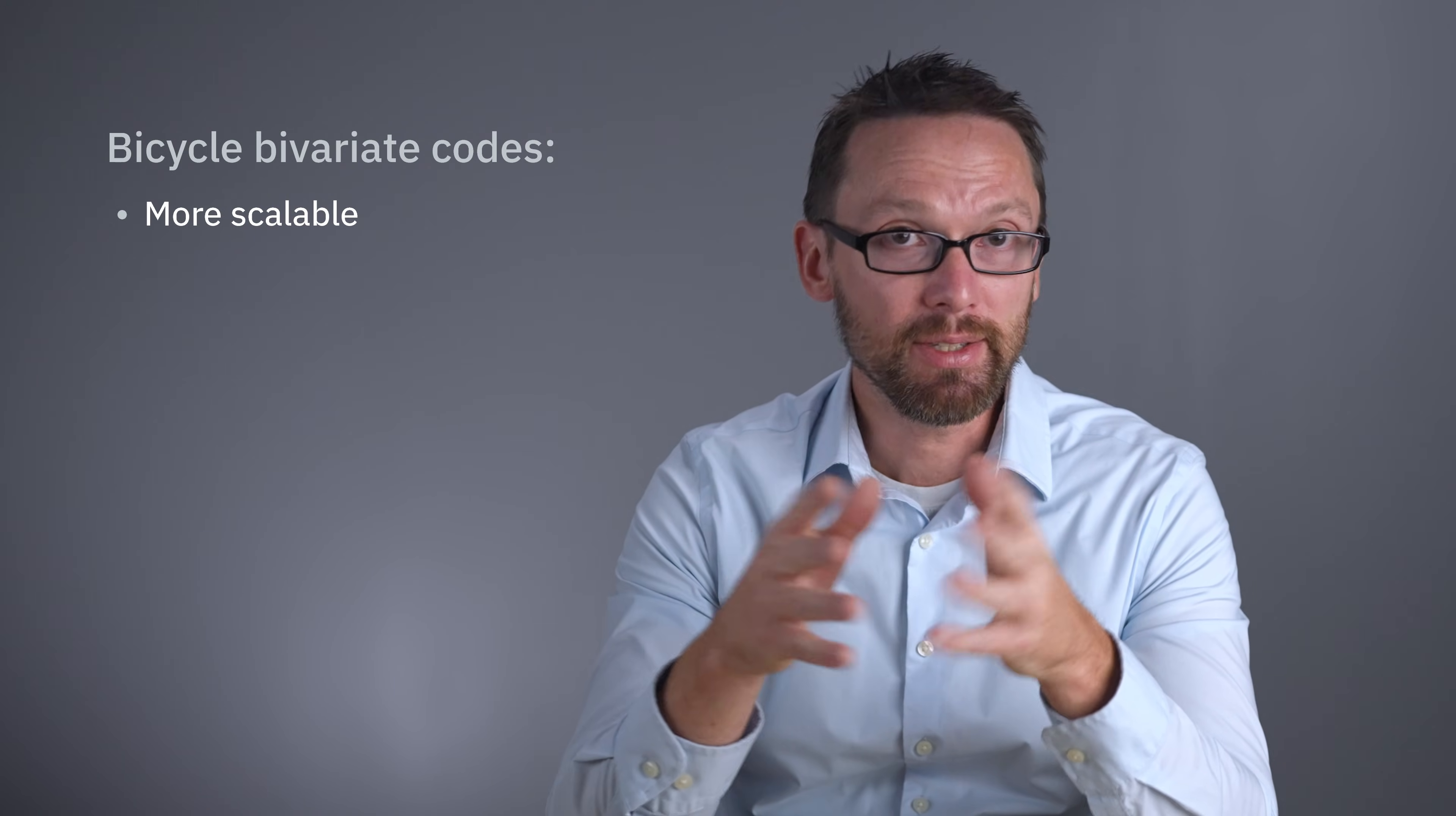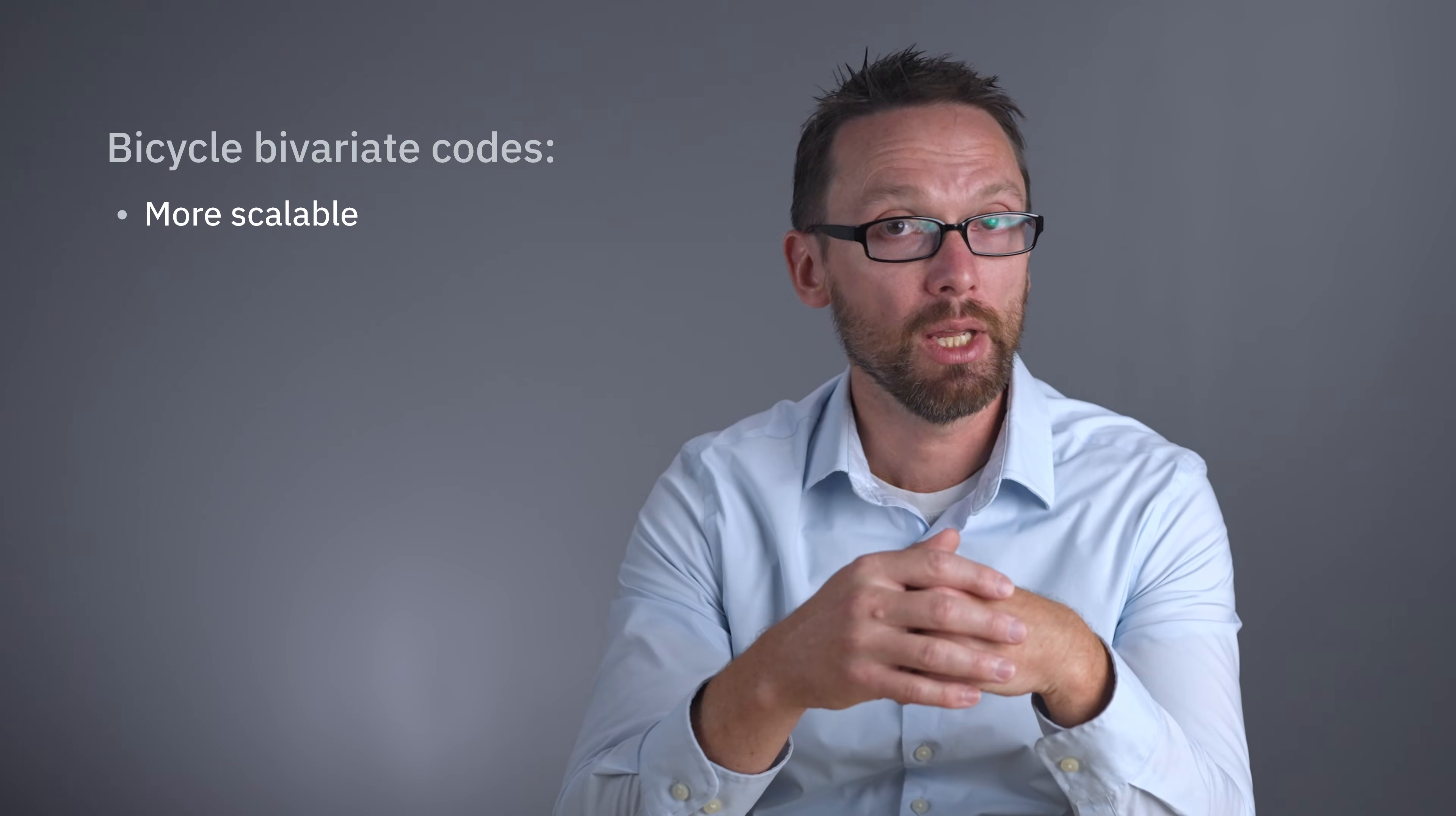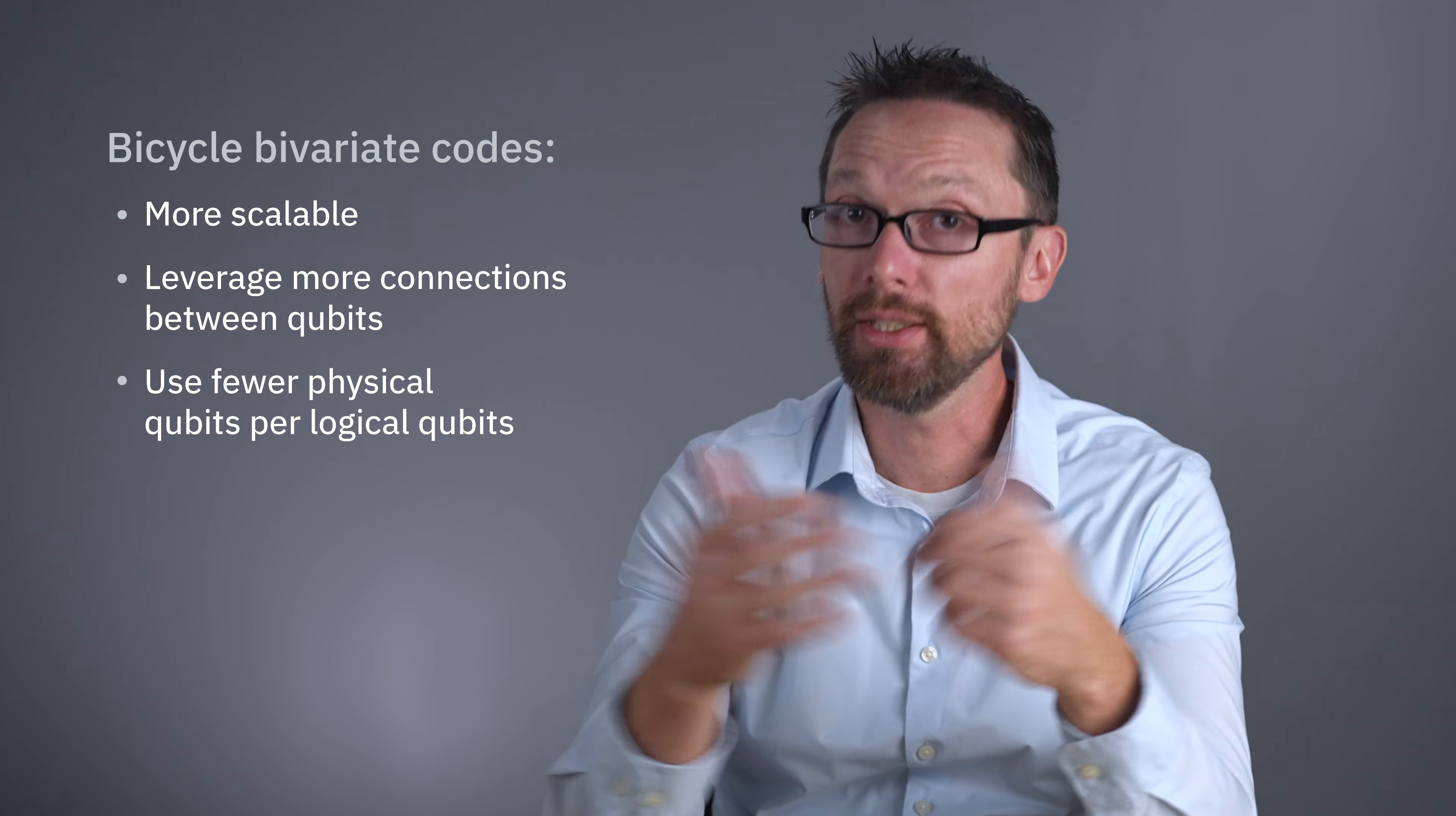A big thing that makes this family of codes attractive is scalability. LDPC codes, in general, use parity checks that each involve only a small number of qubits, but they distribute those checks across the whole system. What sets BB codes apart is that by leveraging more connections between the qubits than in surface codes, they can keep the error correction strong with far fewer physical qubits per logical qubit. But keep that requirement in mind, this does involve higher connectivity between qubits.